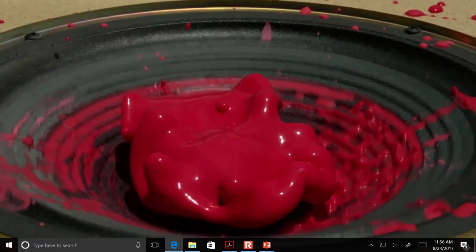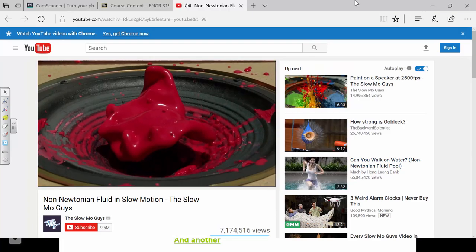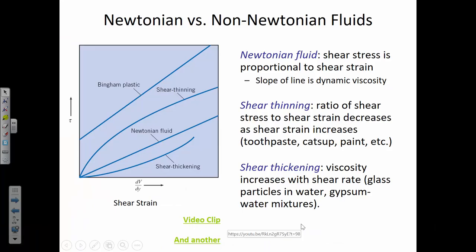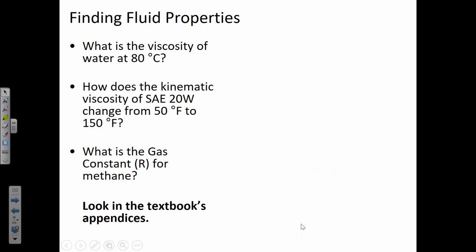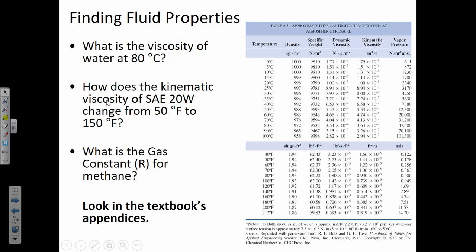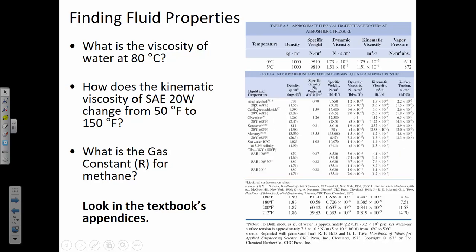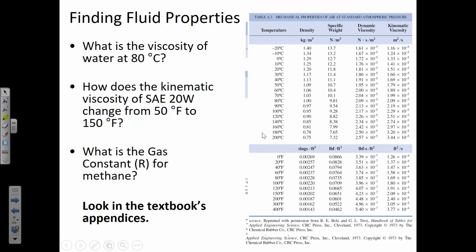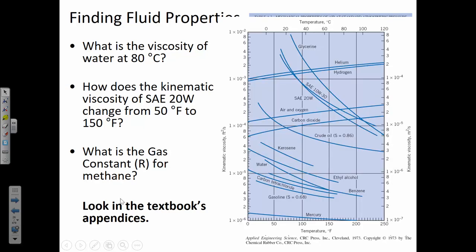So shear thickening fluid — I haven't yet found a really good video illustrating shear thinning, but I'm sure there's one out there. A word about your textbook: it's where you find fluid properties. You'll have homework problems asking for viscosity of water at a certain temperature, or a change in viscosity. All that information is in the appendix — table A5 illustrates fluid properties for water, and there are other tables for alcohol, mercury, seawater, and oils.